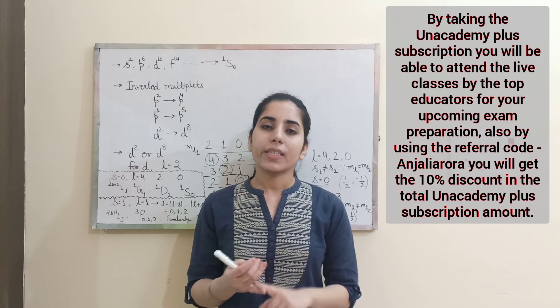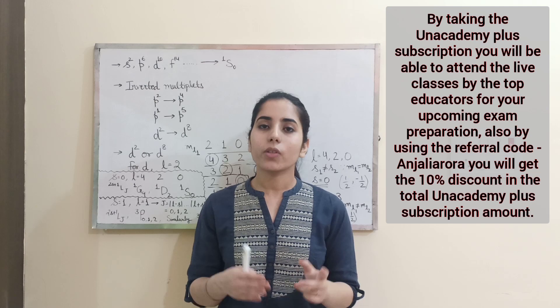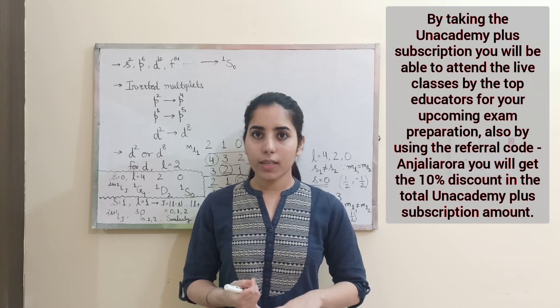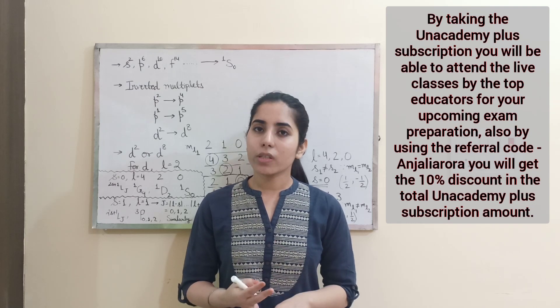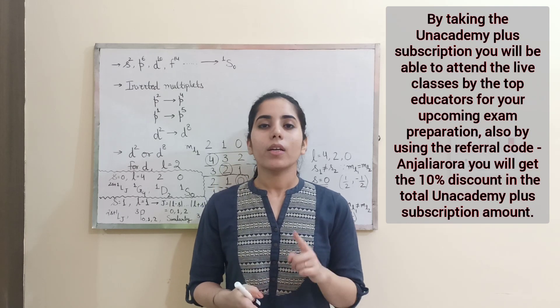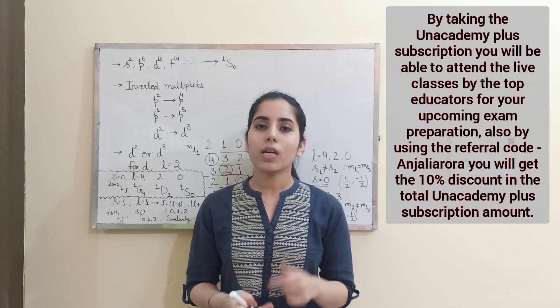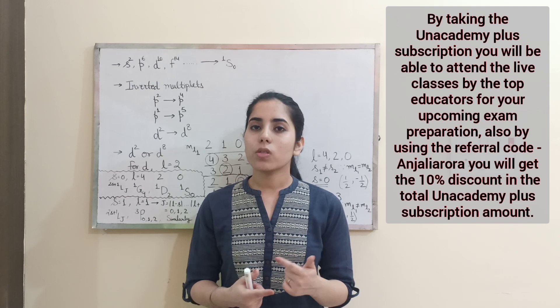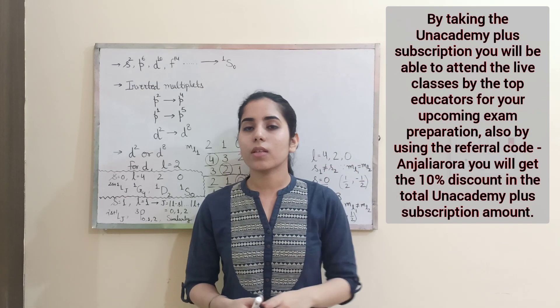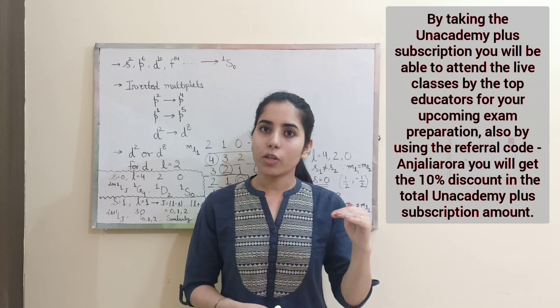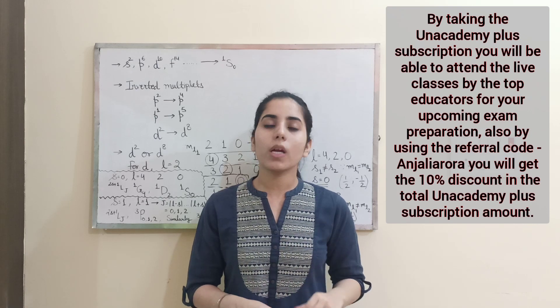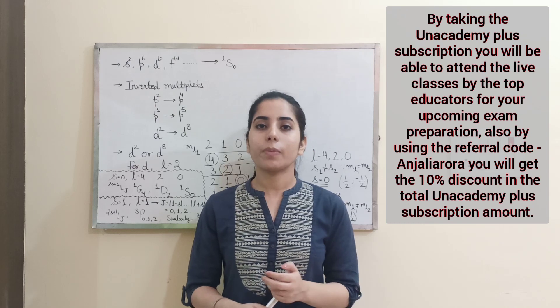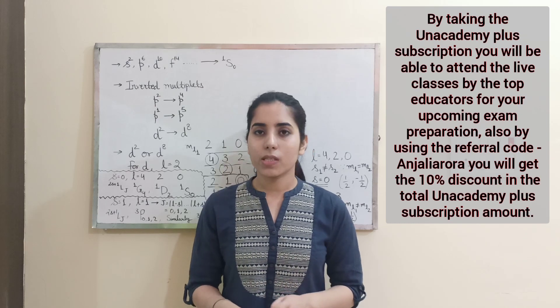And one more thing guys, that is what are the steps you need to take to get the Unacademy Plus subscription. So guys, first of all, download the Unacademy Learning App. Then log into the app. Then select your goal. Your goal will be CSIR or UGC Net. If you are preparing for CSIR or Net Physics exam. After that, you just need to click on the three lines present in the left hand side corner. Then click on plus. Then click on get subscription. And follow the further steps. And just by following the further steps, you will easily be able to take the Unacademy Plus subscription.